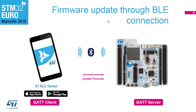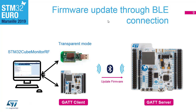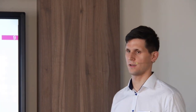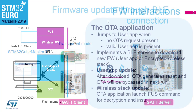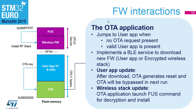There are two ways to perform OTA. You can use the ST BLE Sensor app, available on GitHub in source, to carry out firmware upgrades with your phone. The second way is with another STM32WB flashed with the OTA client in transparent mode, which communicates with CubeMonitor RF running on your computer. CubeMonitor RF can access ACI commands of the Bluetooth stack, but here we focus on OTA.